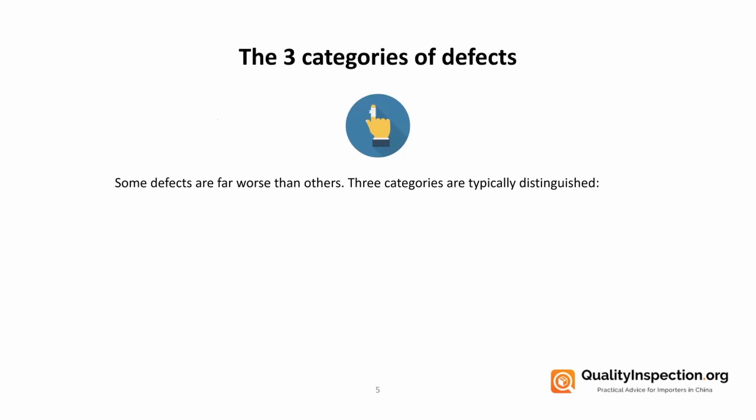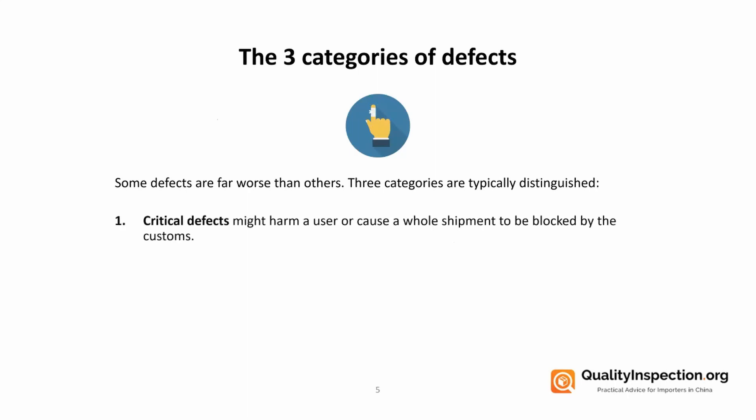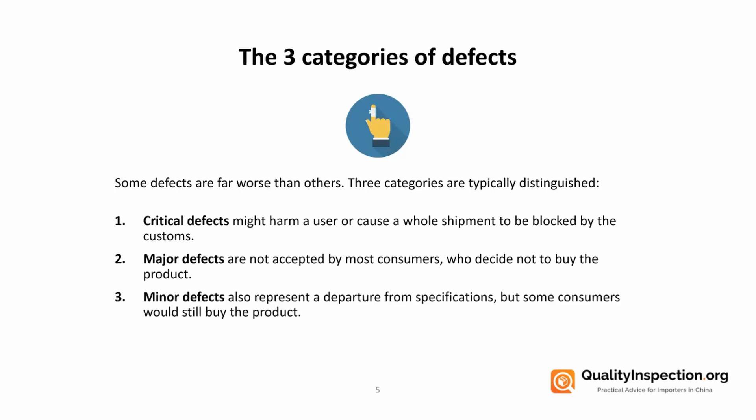There are three categories of defects that you need to understand, categorized in descending order of seriousness. Critical defects are so bad that they might cause a user harm or might cause your entire shipment to be blocked by customs. Major defects aren't as bad as that, but they would probably lead to most consumers not buying products or returning them quickly. Minor defects represent a very slight departure from your specifications but would probably be accepted by most consumers.